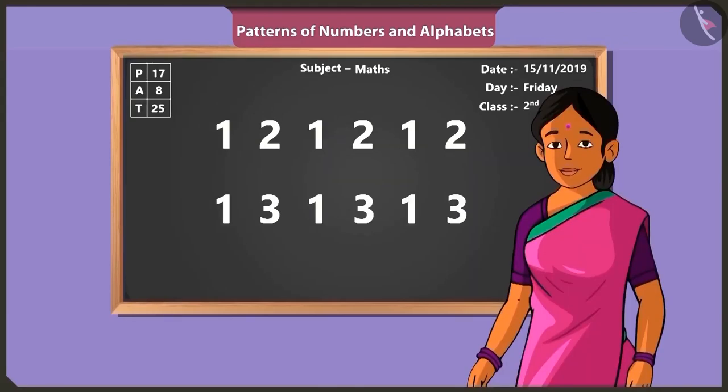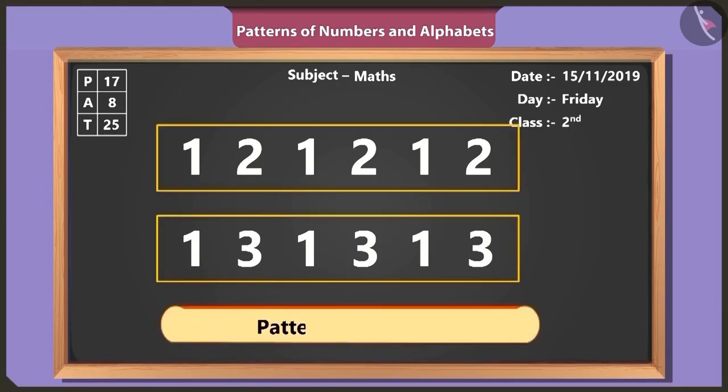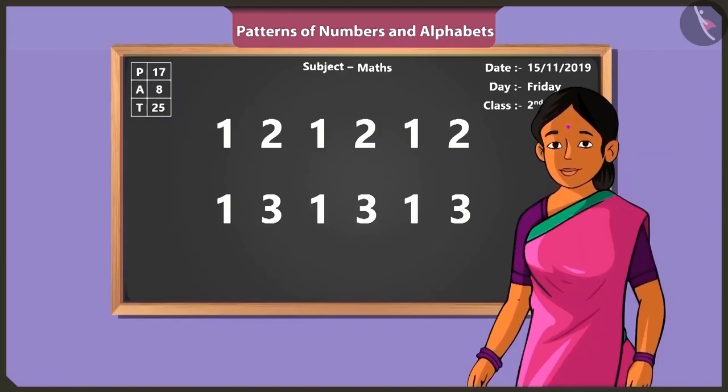Well done, Binny. Now can you tell me, what is the special about these numbers? Here, the first line, the number one and two are repeated again and again. And in the second line, number one and number three are repeated. Oh yes, this has become a pattern of numbers. Rightly said, Binny.